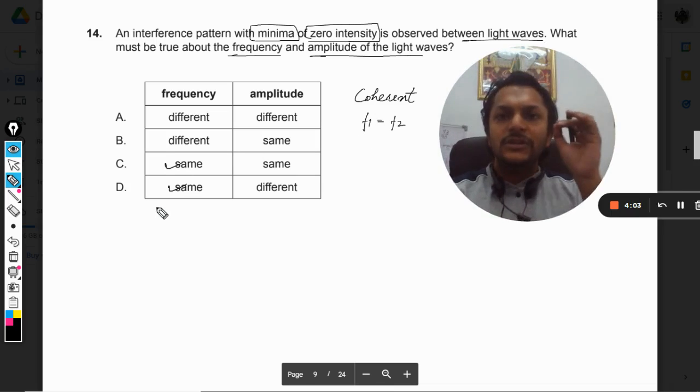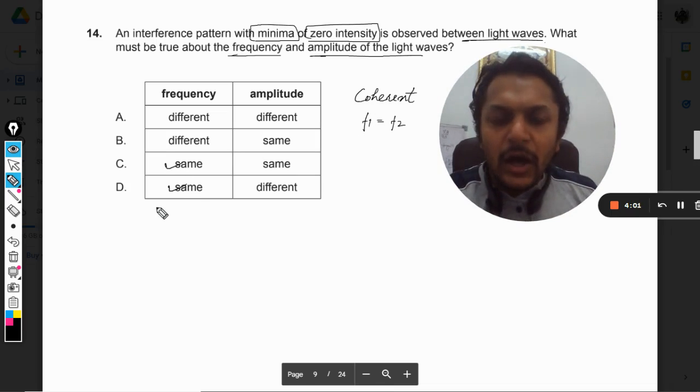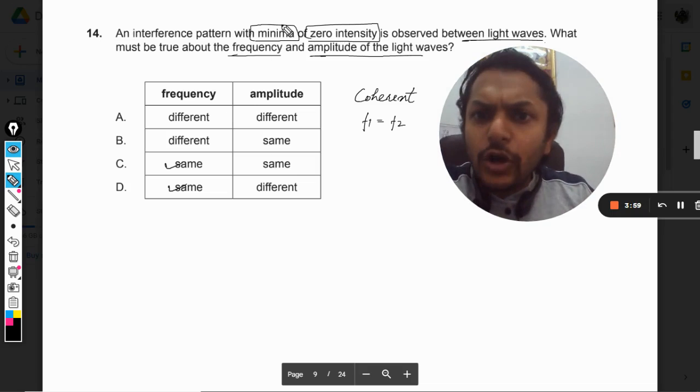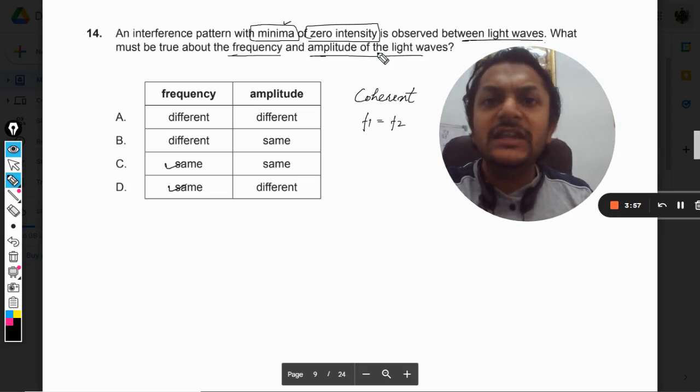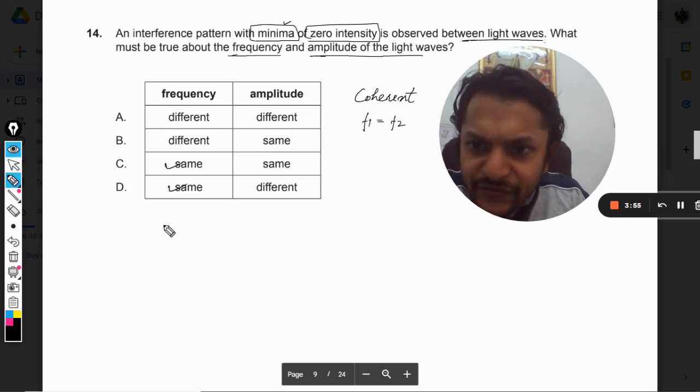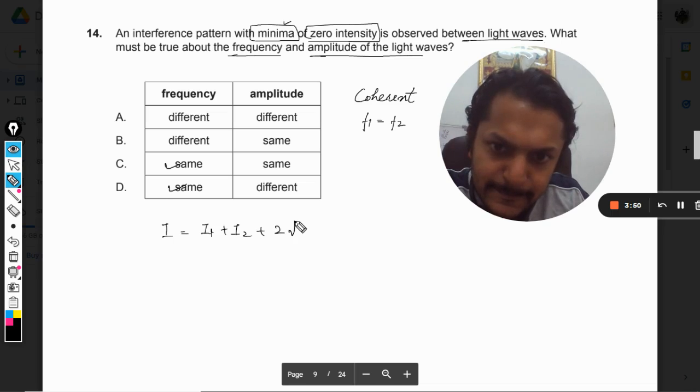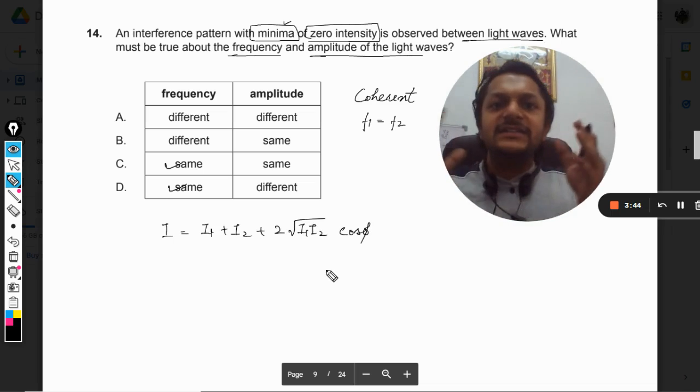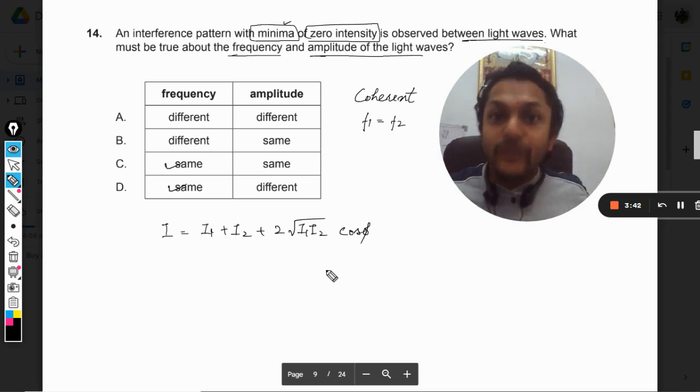Now what about the second part? Now we're talking about the minima of the resultant intensity. So what is the formula for the intensity? The formula for intensity is I₁ + I₂ + 2√(I₁I₂) cos φ, where φ is the phase difference between two waves which are interfering. I₁ is the intensity of the first wave, I₂ is the intensity of the second.